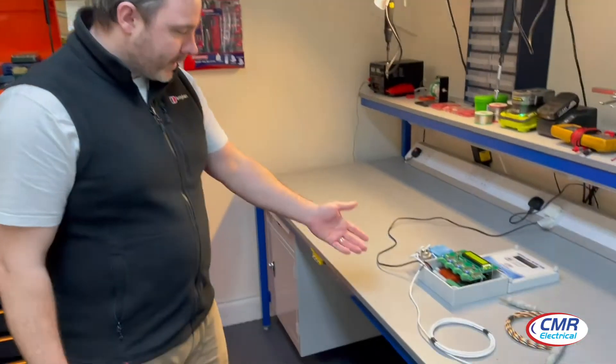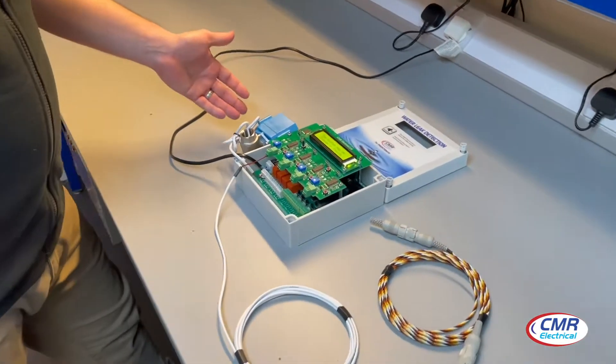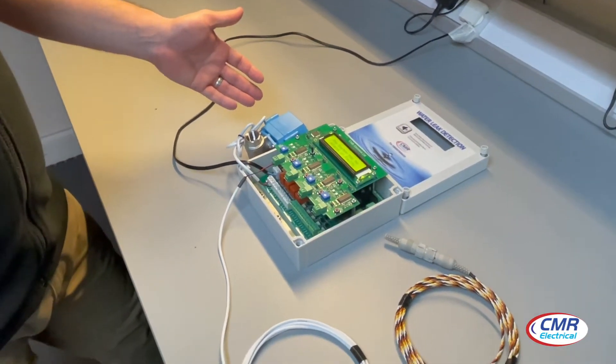Hi, my name is Chris at CMI Electrical. Today we're here to talk about the LD4-2 water leak detection system, and this is it. This system can be a three or four zone water leak detection system.